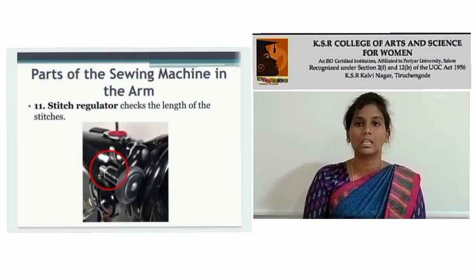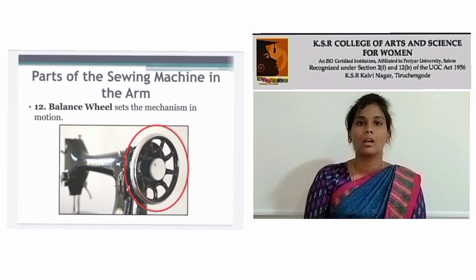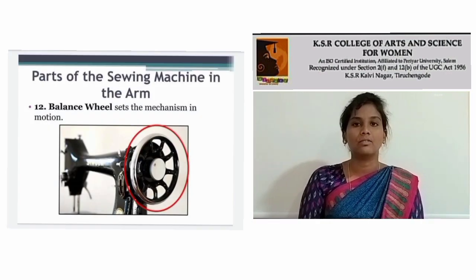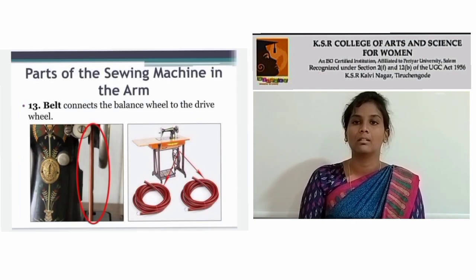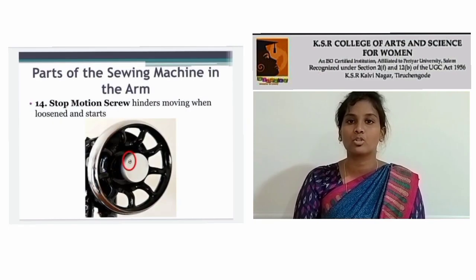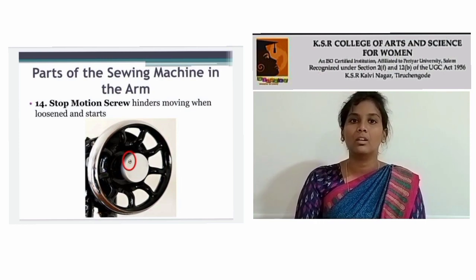Stitch regulator — checks the length of the stitches. Balance wheel — sets the mechanism in motion. Belt — connects the balance wheel to the drive beam. Stop motion scroll — controls movement when loosening the start.